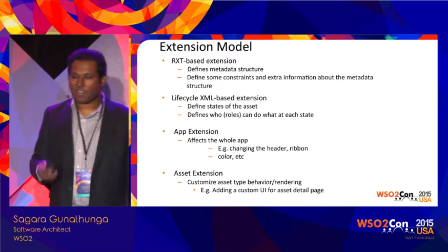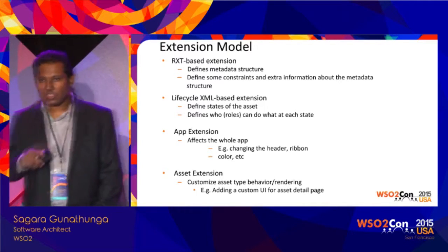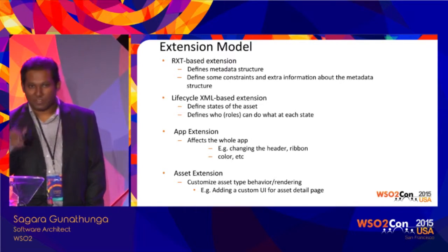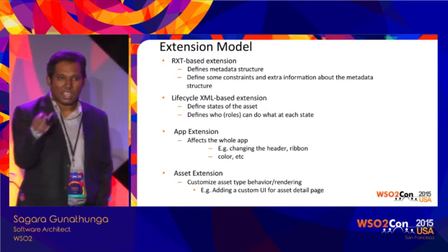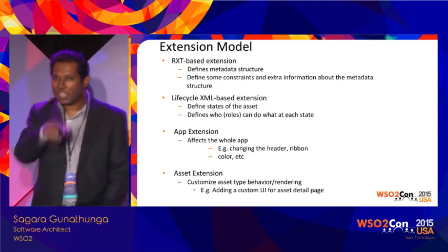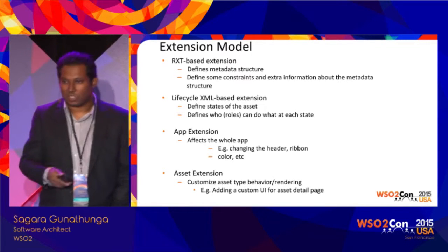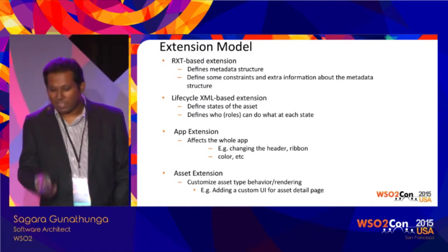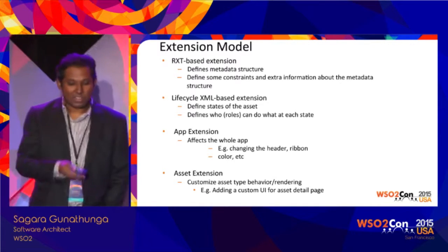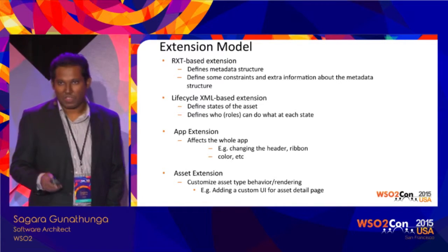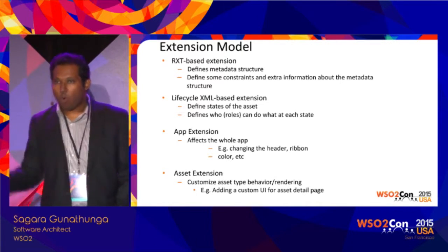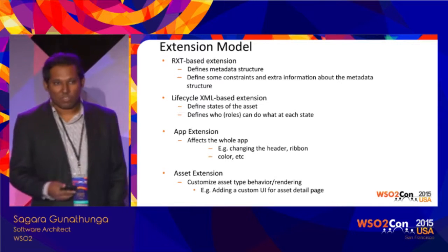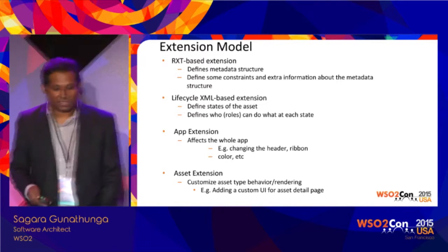If you go to governance registry's REST service UI, you can see in the middle of the UI some WSDL files. If you go to a SOAP service, you can see the WSDL file rendered in the middle of the service description — that is an example of asset extension, which is only specific to a particular asset type. So this is the difference: if you have something common across all asset types, define it as an app extension. If you have something very specific to a particular asset type, define it as an asset extension.